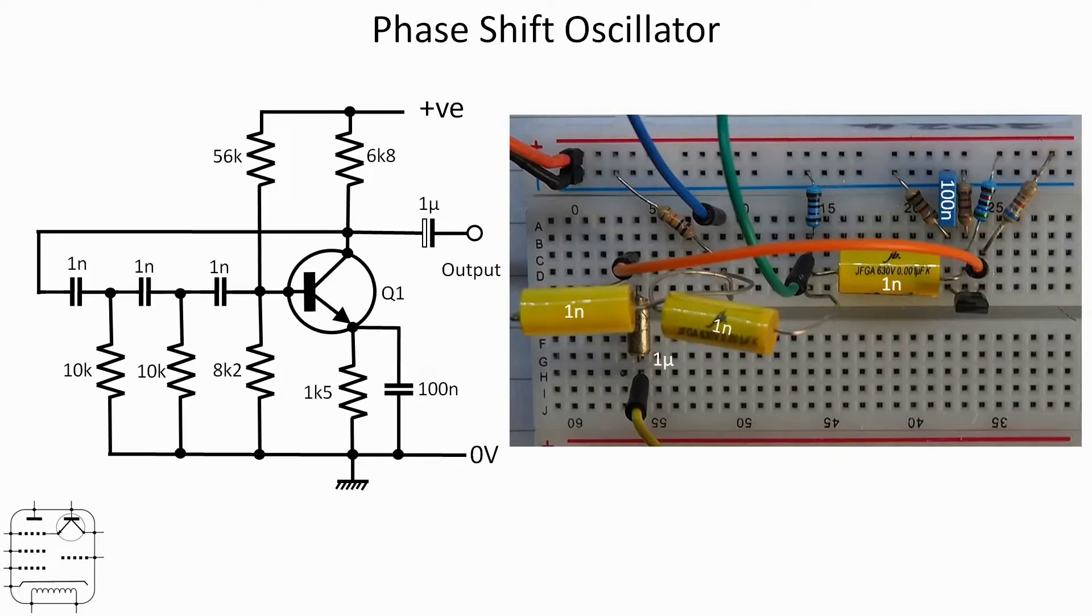The one microfarad is just tucked away down the bottom near the yellow jumper, and the 100 nanofarad is the little blue rectangle up on the top right. Resistors I think are fairly straightforward, and the transistor is as per those connections: emitter, base, collector. The line that takes the feedback from the collector back to the start of the capacitors is the orange jumper that runs across the center of the image there.